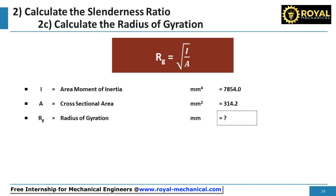Next, let's calculate the radius of gyration. The formula to calculate the radius of gyration of the pillar, Rg, is equal to the square root of I divided by A. By substituting the values of area moment of inertia and cross-sectional area, the radius of gyration is 5.0.